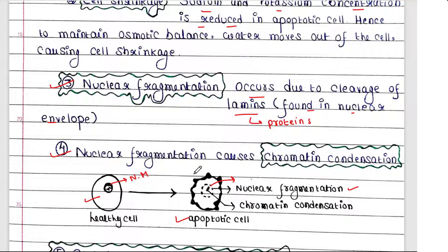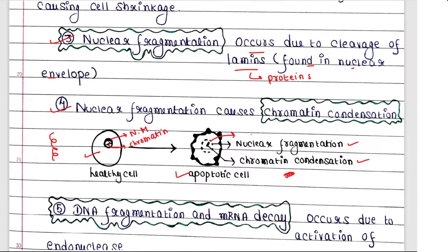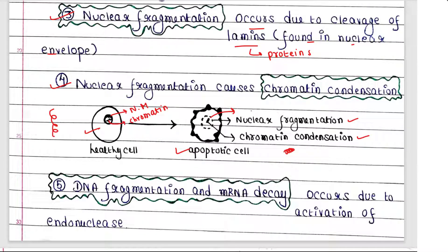Nuclear fragmentation causes chromatin condensation. When nuclear fragmentation occurs, the chromatin present inside the nucleus becomes condensed. In a healthy cell, chromatin is dispersed, but in an apoptotic cell the chromatin is much more condensed — this is called chromatin condensation.